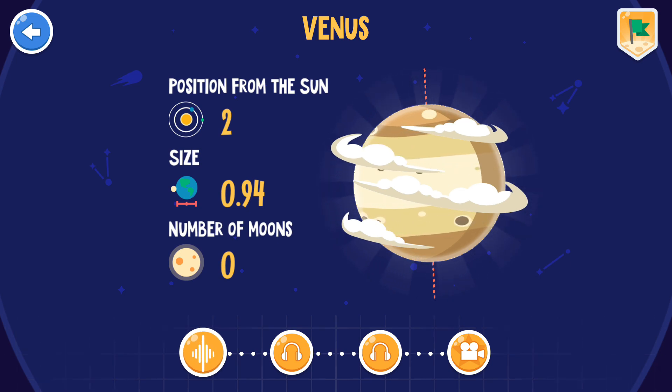Venus is the third brightest object in the night sky, seen from Earth after the Sun and Moon. As Venus rotates very slowly on its axis, a day on Venus is longer than the whole year. In mythology, Venus was the Roman goddess of love and beauty.